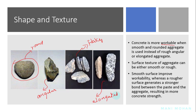Most natural sands and gravel from riverbeds or seashores are smooth and rounded and are excellent aggregates for making workable concrete. Crushed stone produces much more angular and elongated aggregates, which have a higher surface-to-volume ratio and better bond characteristics, but require more cement paste to produce a workable mixture.